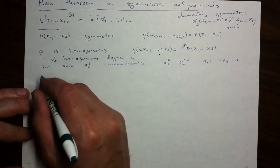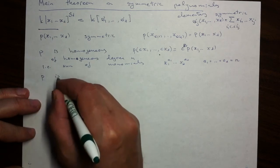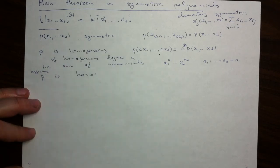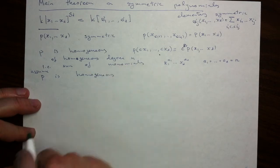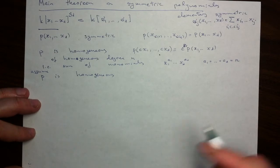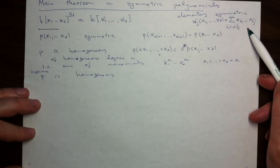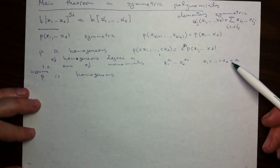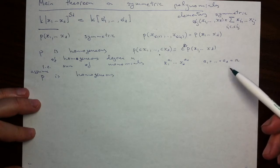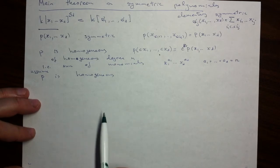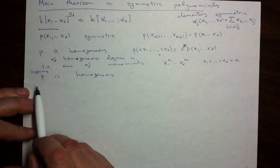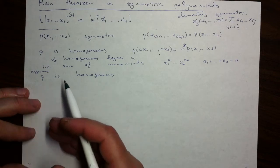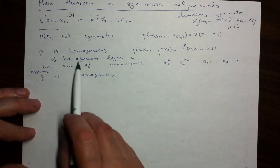So let's assume that p is homogeneous. All elementary symmetric polynomials are homogeneous, and homogeneous polynomials multiplied and added will give something homogeneous. So we will always stay within homogeneous polynomials when doing algebraic operations. Now is the true body of the argument: we're going to do the induction step by decreasing a certain finer order than the homogeneous degree, namely the lexicographic order on monomials.